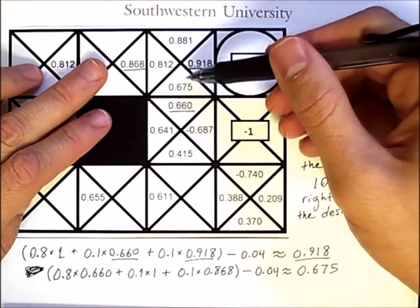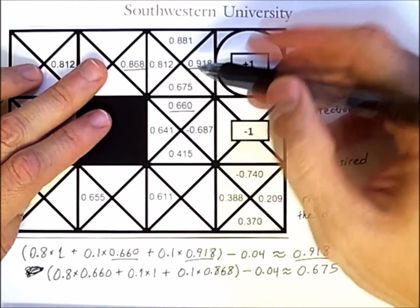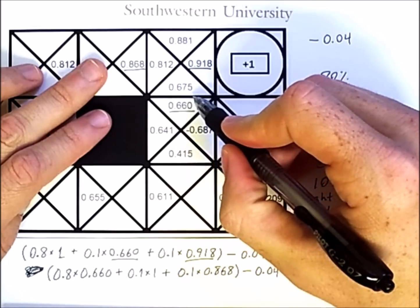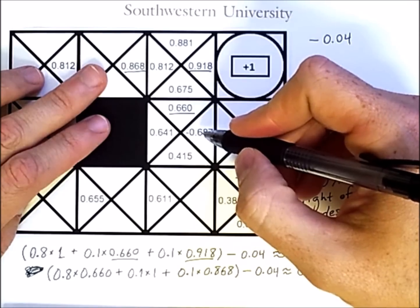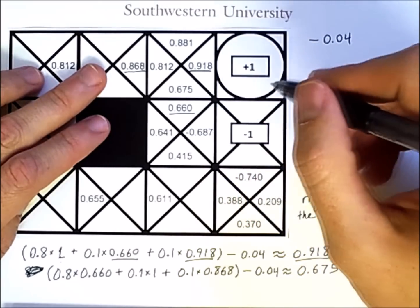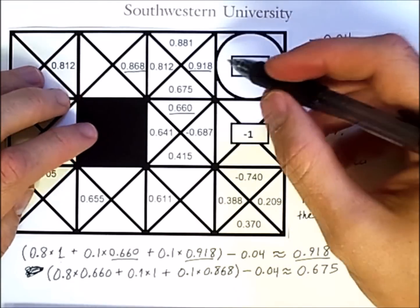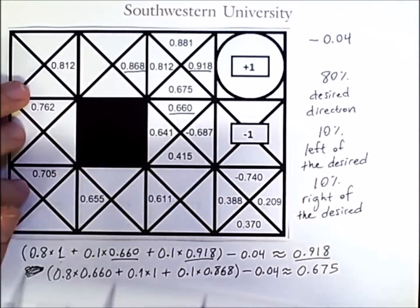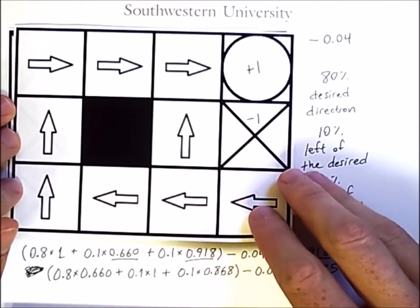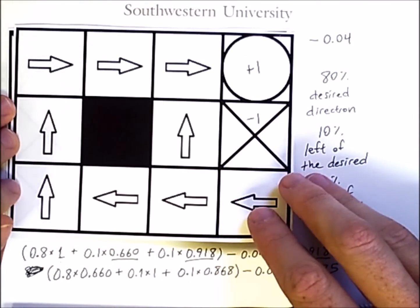So the value of moving down from this state is 0.675. These are Q values. A Q value is the value of taking a given action in a particular state and then afterwards following some designated policy, in this case, the optimal policy.